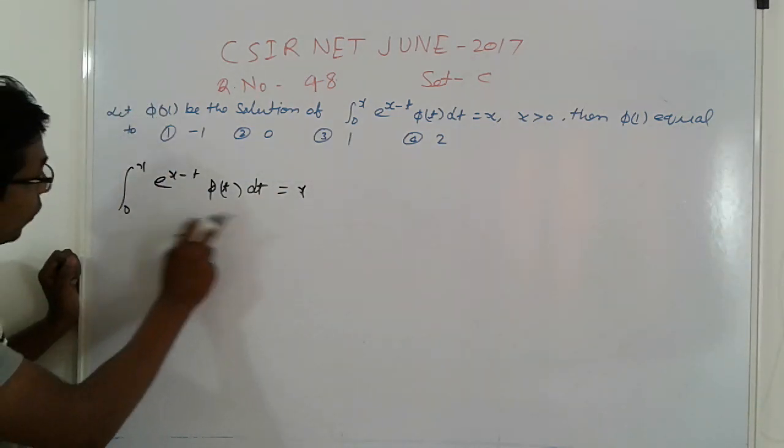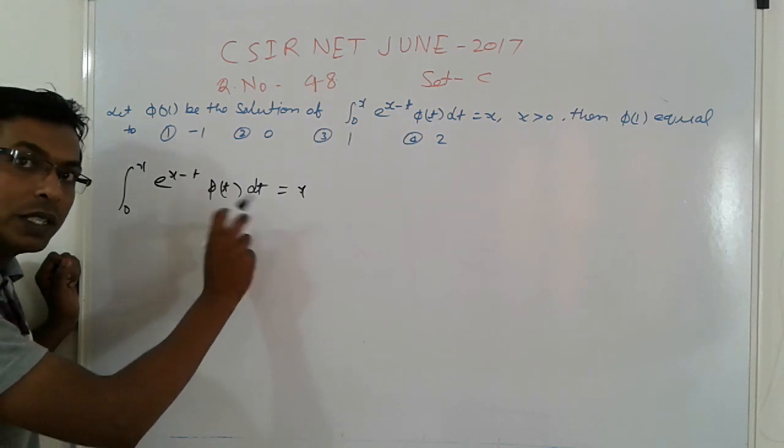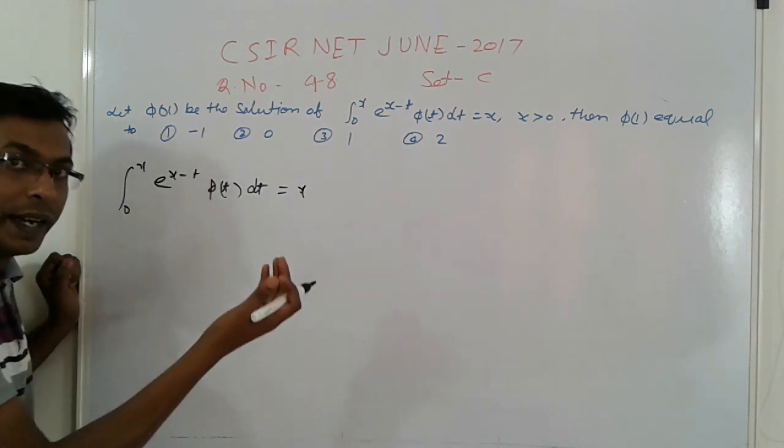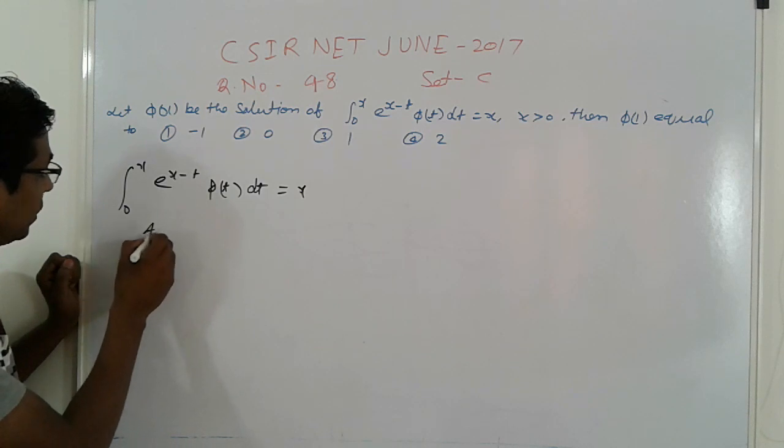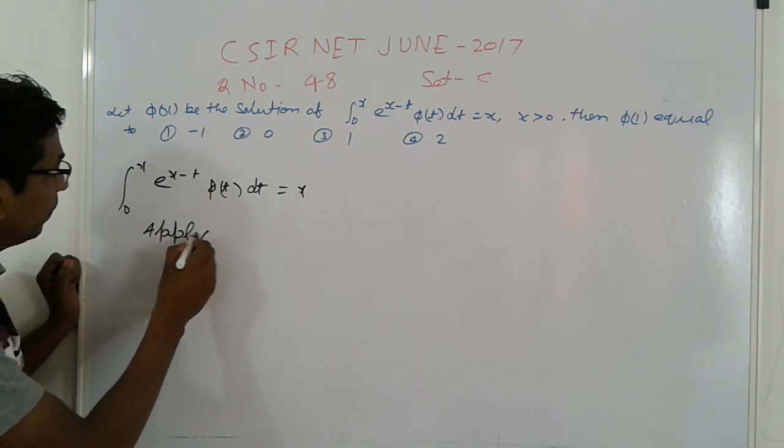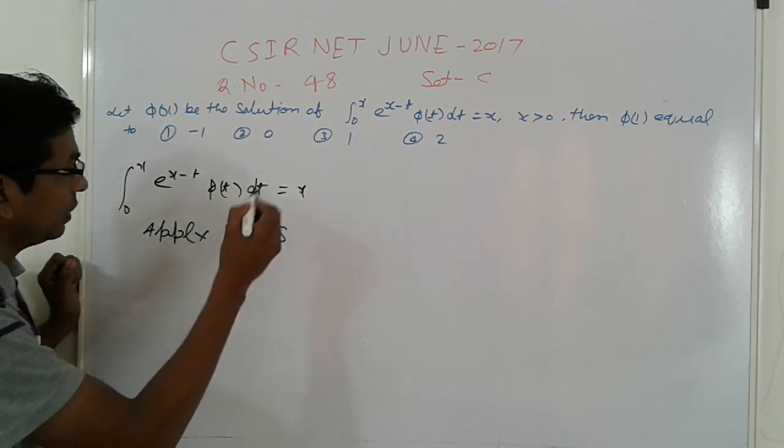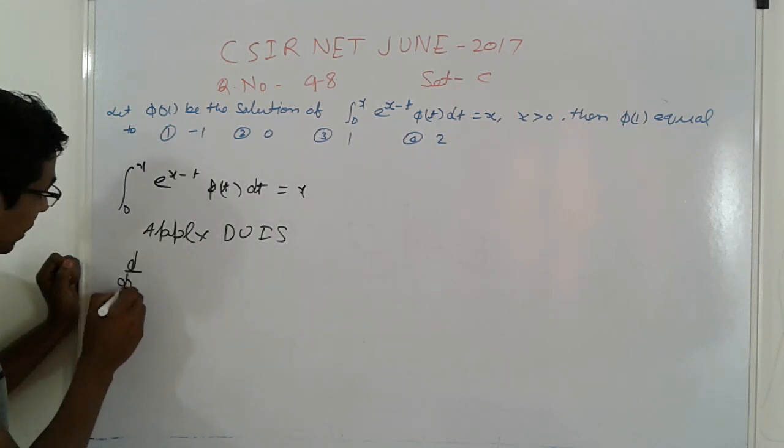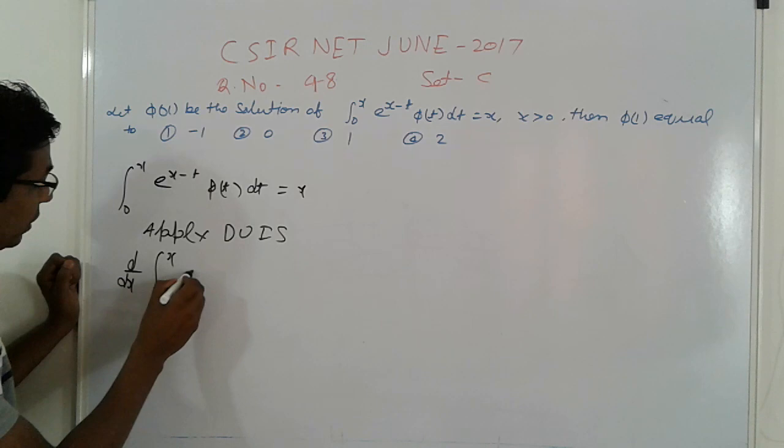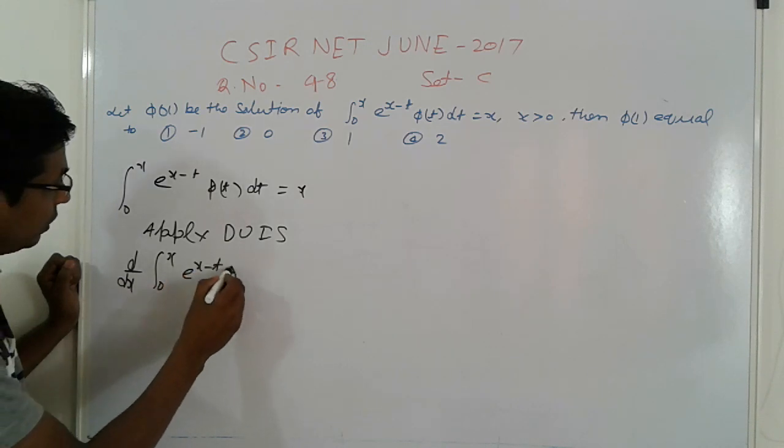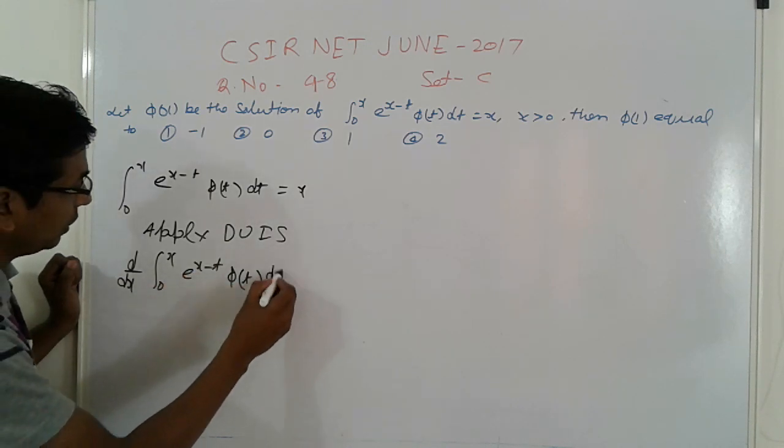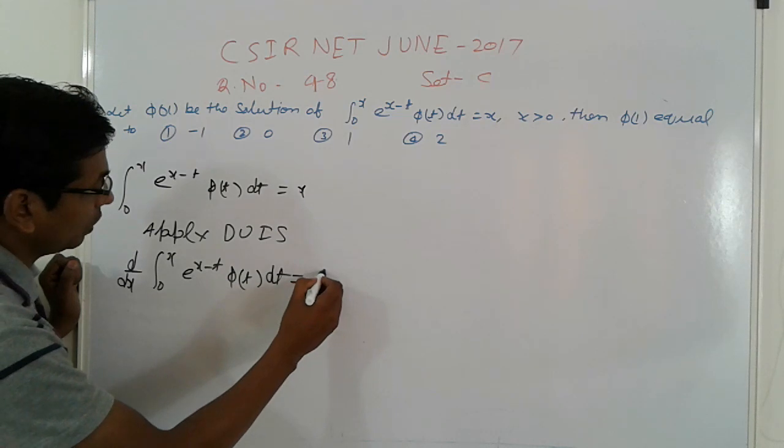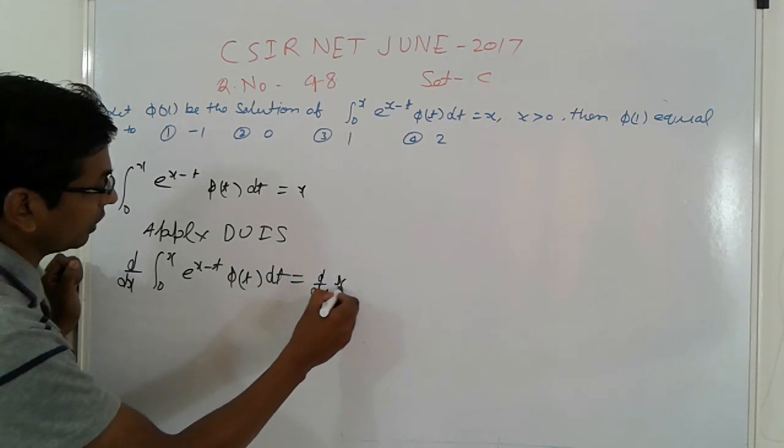Apply DUIS - differentiation under the integral sign. This means d/dx ∫₀ˣ e^(x-t) φ(t) dt = d/dx(x) = 1.